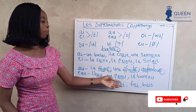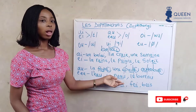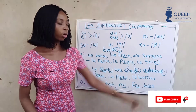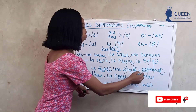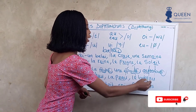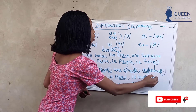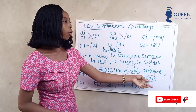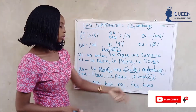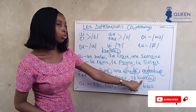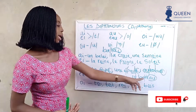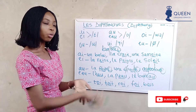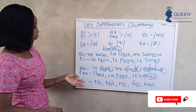We have 'eau' in words like 'l'eau' for water, 'la peau' for skin, and 'le bureau' for office. For 'bureau': 'bu' plus 'reau' — the 'eau' gives 'o' — so we get 'bureau'. It's quite easy once we know how these diphthongs work.